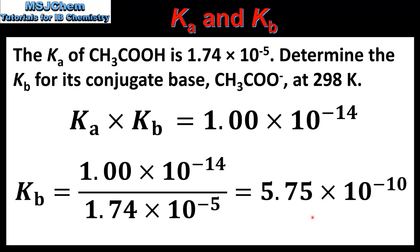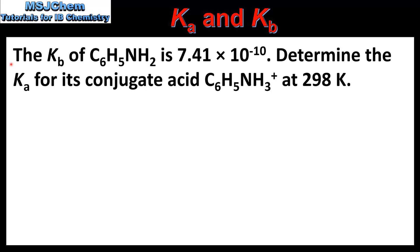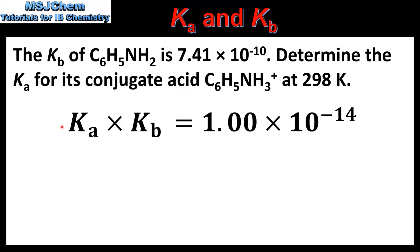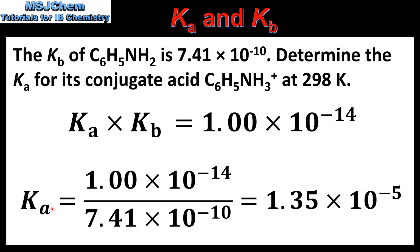Let's look at one more example. The Kb of phenylamine is 7.41×10⁻¹⁰. Determine the Ka for its conjugate acid at 298K. Once again we use the relationship between Ka and Kb at 298K. To find the Ka for the conjugate acid we divide Kw by the Kb of phenylamine, which gives us 1.35×10⁻⁵.